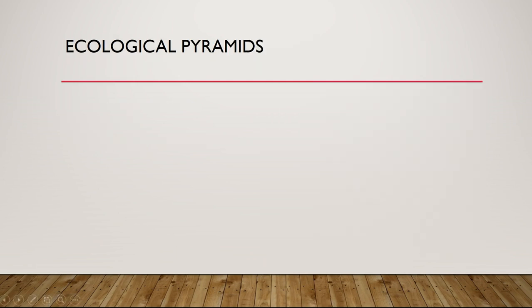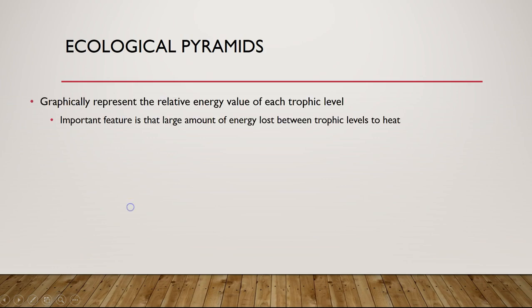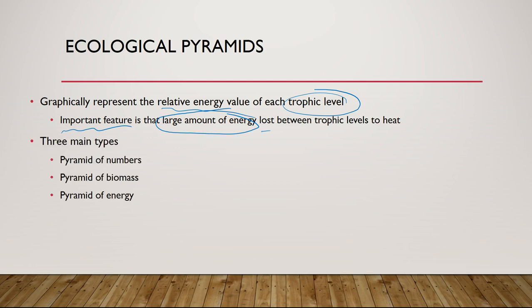One of the ways we represent this tendency of energy being lost as we go up is what we call ecological pyramids. These graphically represent the relative energy value of each trophic level, shown in the form of a pyramid. The important feature is that a large amount of energy is lost — use air quotes around 'lost' — because it's not truly lost, it just becomes less usable with each transfer between trophic levels, as heat.